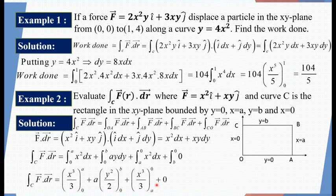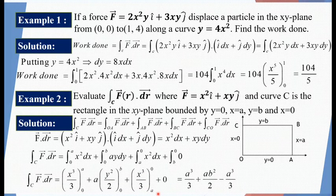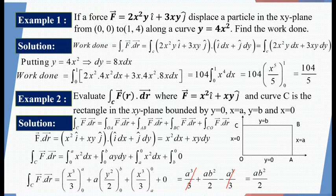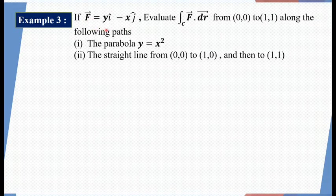Now x³/3 from 0 to a gives a³/3, a·y²/2 from 0 to b gives ab²/2, and x³/3 from a to 0 gives 0 minus a³/3. The a³/3 and minus a³/3 cancel out, leaving only ab²/2. Therefore the required value of integral C of vector F dot vector dr is ab²/2.